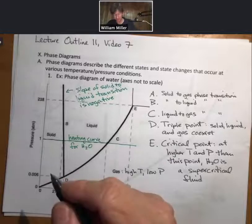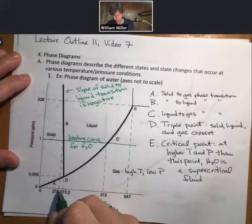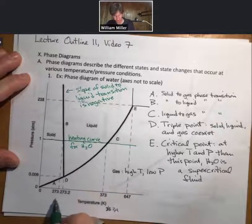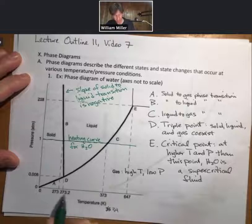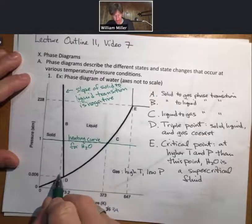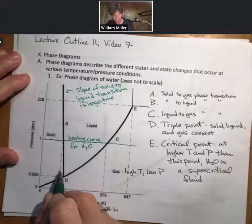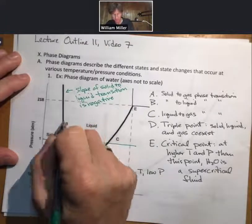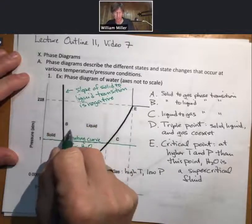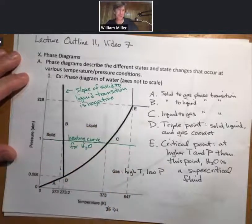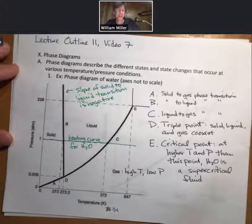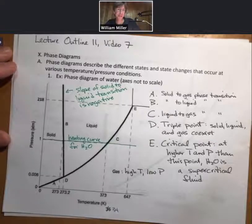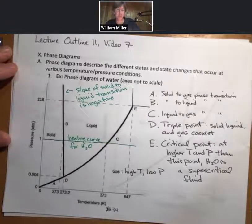What this means is that if you're at 273 kelvin and you are at a low pressure, if you increase pressure on water, you will turn it from a solid to a liquid. And in fact, this is related to the fact that the solid phase of H2O is less dense than the liquid phase of H2O.